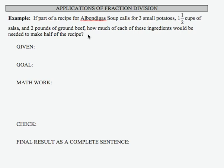In this example we have an application of fraction division. If part of a recipe for albondiga soup calls for three small potatoes, one and a half cups of salsa, and two pounds of ground beef, how much of each of these ingredients would be needed to make half of the recipe?